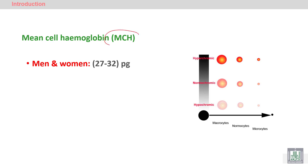Another red blood cell index is the mean cell hemoglobin, or MCH. MCH represents the concentration of hemoglobin inside the red blood cells. When the concentration is very low, the cells are called hypochromic red blood cells. When the concentration is very high, they are called hyperchromic. In between, we have normochromic red blood cells. The variation in color reflects the variation in concentration of hemoglobin inside the red blood cells.